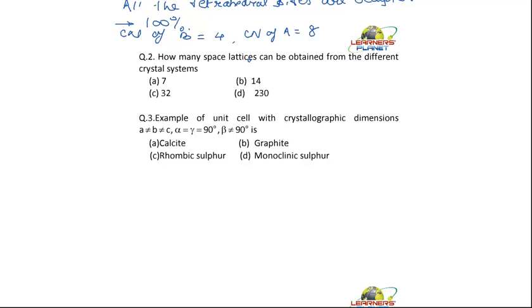So there are how many crystal systems? 7. So there are 7 crystal systems. And how many Bravais lattices or space lattices are present? They are 14. Right? So what will be the answer of this question? 14. This is a very simple question.